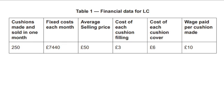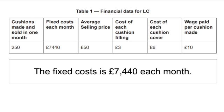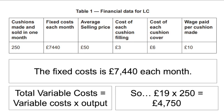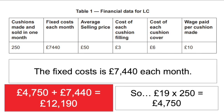We've got fixed costs of £7,440 each month and examples of variable costs: cushion filling £3, cushion covers £6, and wages paid per cushion made at £10. This gives us a variable cost per unit of £19. We need to times that £19 by their output, because what we care about is total variable costs. So £19 times 250 units gives us £4,750. Adding fixed costs and total variable costs, our total costs for that month are £12,190.